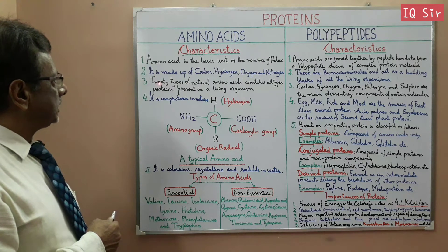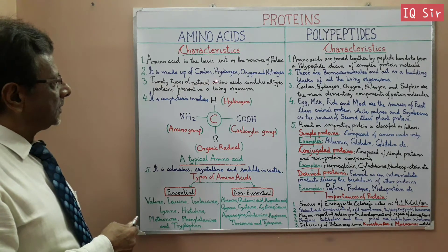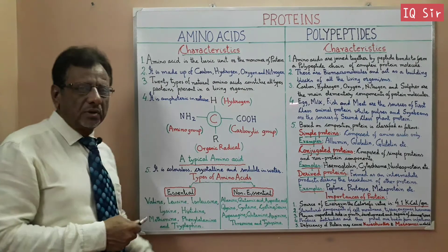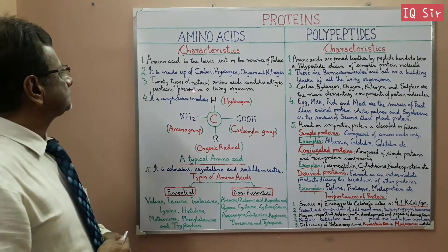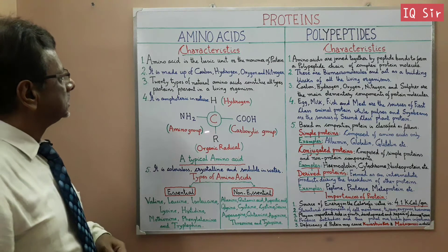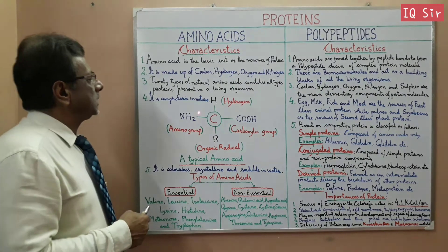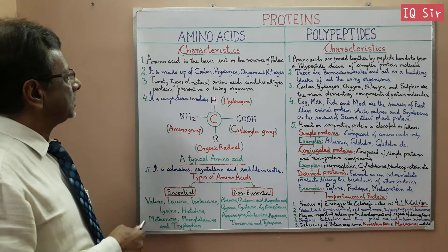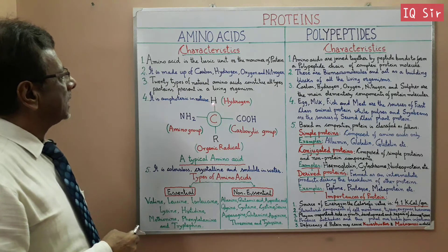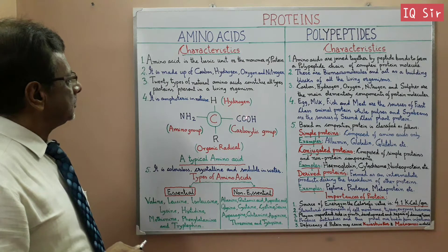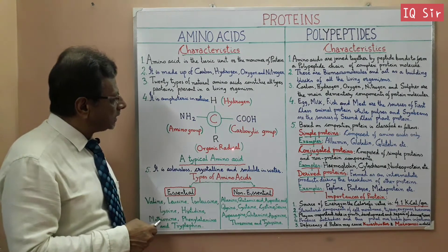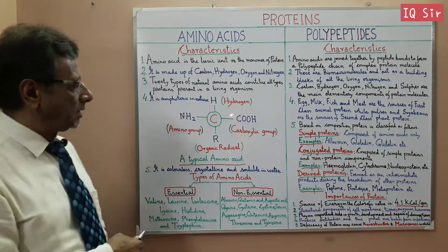There are 20 types of natural Amino Acids that constitute all types of protein in a living organism. If we look at the typical structure of Amino Acid, carbon is the centre and it has about 4 valences. The hydrogen, carbon group and amino group remain the same in all Amino Acids. It is the R-group of organic chemicals which changes in different Amino Acids.